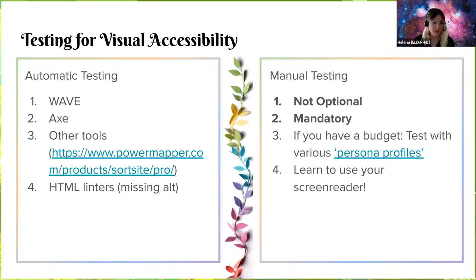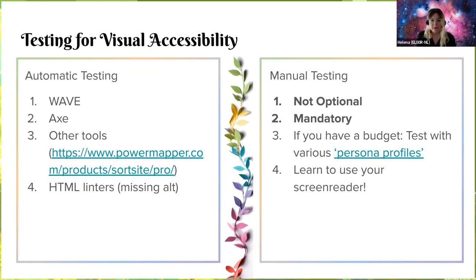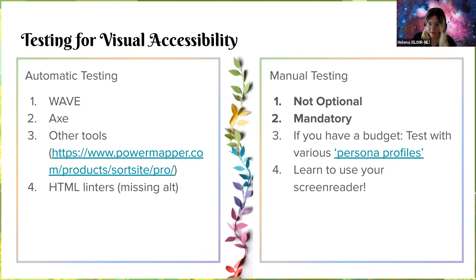When we talk about testing for visual accessibility, people who don't have impairments also benefit from these improvements. We have a lot of automatic testing tools: WAVE and AX, which I'll talk about shortly, and Power Mapper Pro. If you're responsible for the infrastructure, you can make sure all of these tests are automatic. On the other hand, there is manual testing. I've bolded it because it is not optional — it is really mandatory. Just running automated tests unfortunately won't be enough to ensure content is actually accessible.